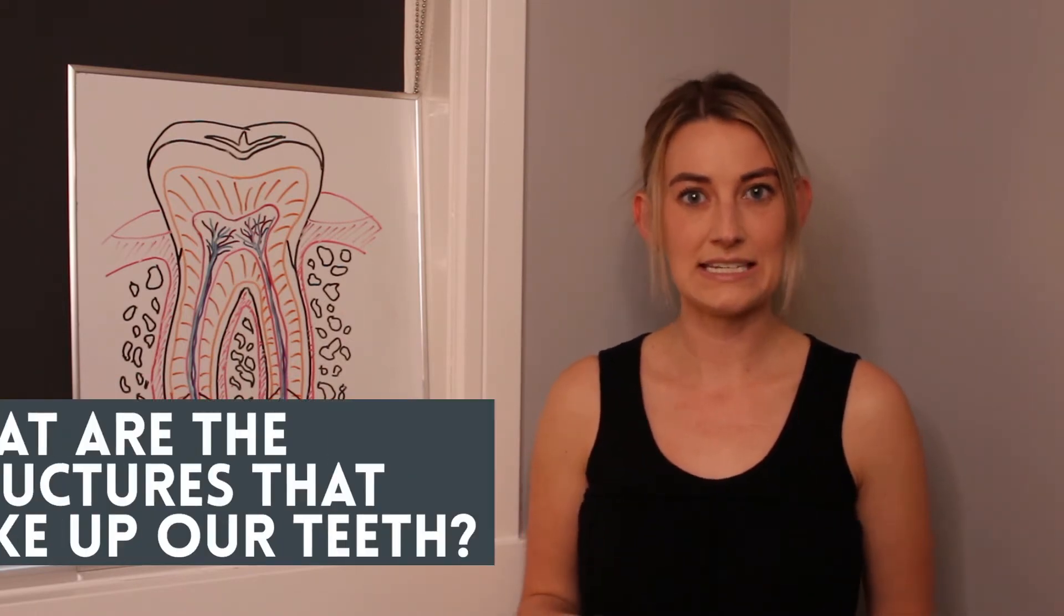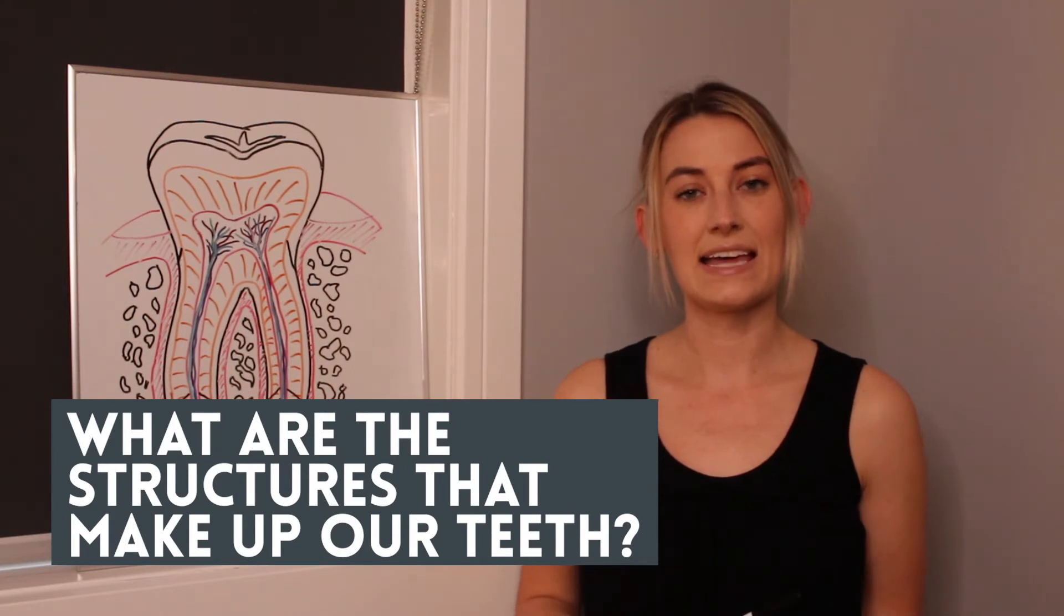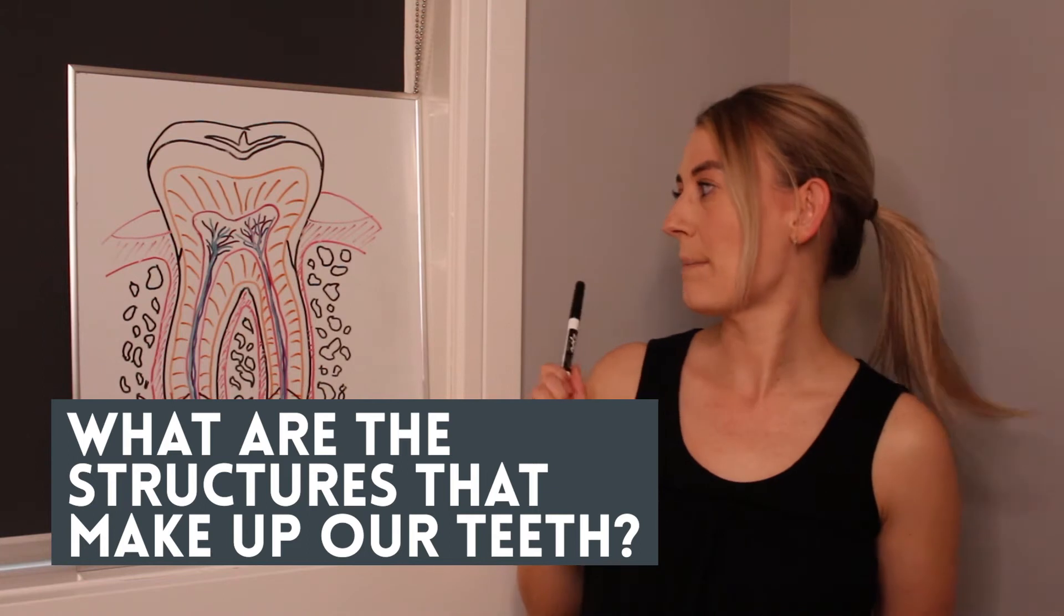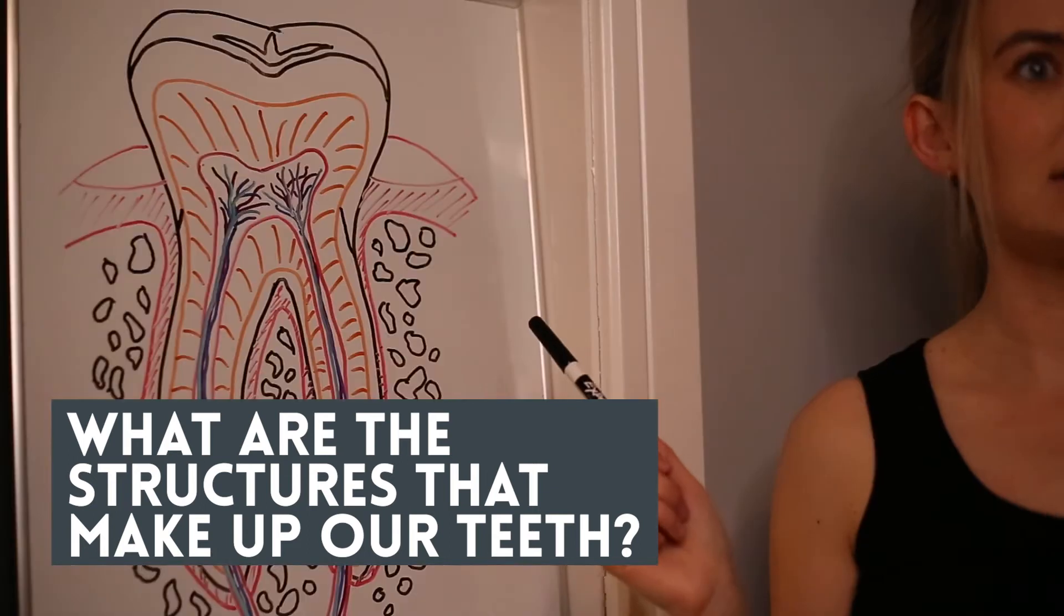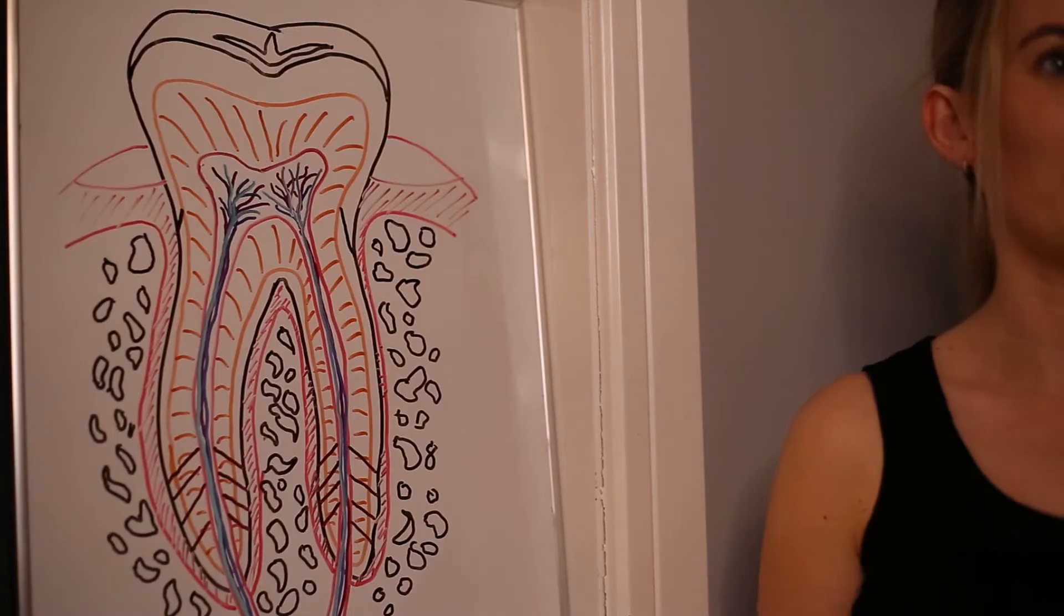Today we're going to just jump right in. I want to talk to you about the different layers to the teeth that we have in our mouths and some of the structures that support them and surround them. So I'm going to be using my picture beside me to help point a lot of the stuff out and then kind of talking about each layer as we go through it.